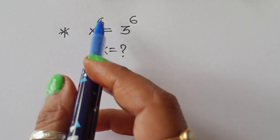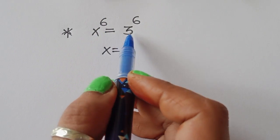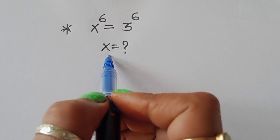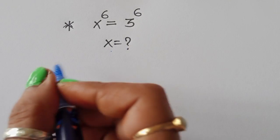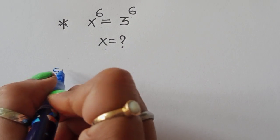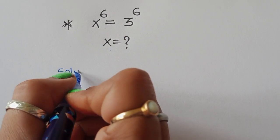The question is: given x⁶ = 3⁶, we have to find out the value of x. Let's see the solution.